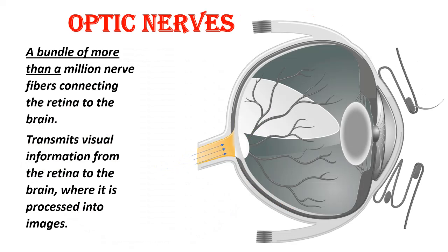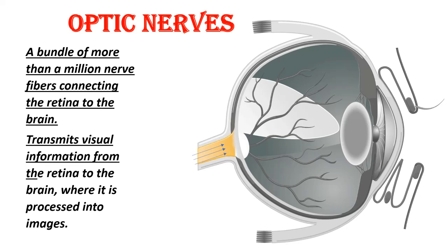Optic nerve: A bundle of more than a million nerve fibers connecting the retina to the brain. It transmits visual information from the retina to the brain, where it is processed into images.